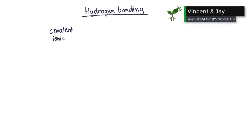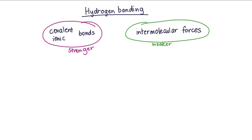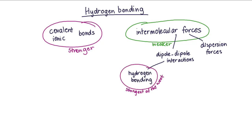Covalent bonds and ionic bonds are much stronger than intermolecular forces. But while intermolecular forces are weaker, they are still really important. The strongest intermolecular force is called hydrogen bonding. Hydrogen bonds are all around us and are essential for life.